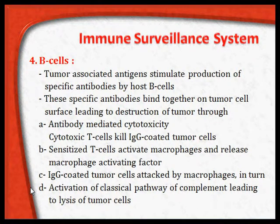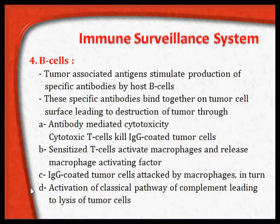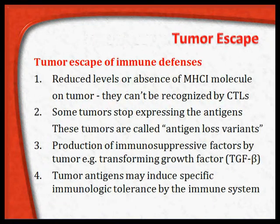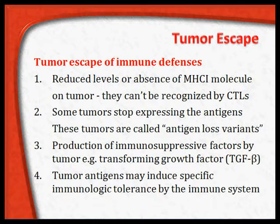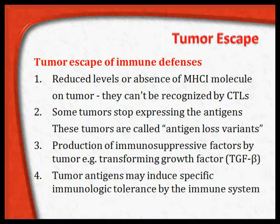But why, in some patients, is this immune surveillance not able to cope with newer or mutated cells, and why are tumors formed? This phenomenon is called tumor escape. Some of these mutated cells, formed during cell division due to various etiological factors, grow and their proliferation is left unchecked by the immune surveillance system.